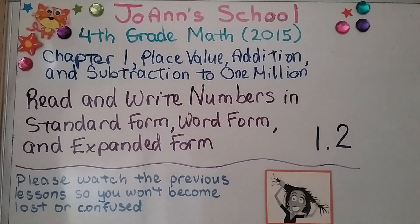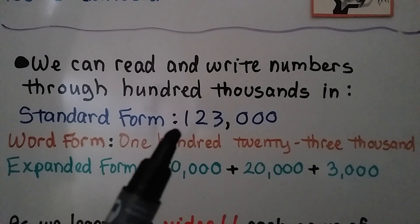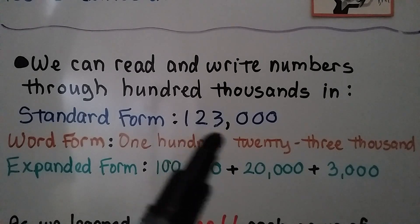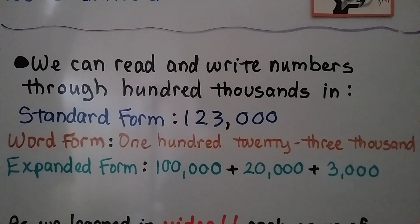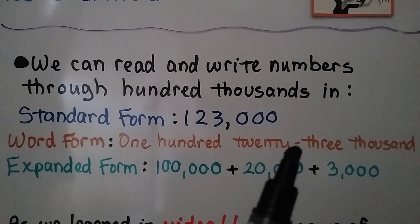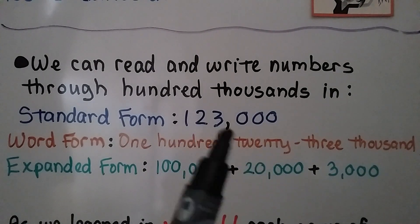Lesson 1.2: read and write numbers in standard form, word form, and expanded form. We can read and write numbers through hundred thousands in all three forms. In standard form we have 123,000 — one hundred twenty-three thousand. In word form we write 'one hundred twenty-three thousand.' In expanded form we add each place value: one hundred thousand plus twenty thousand plus three thousand.